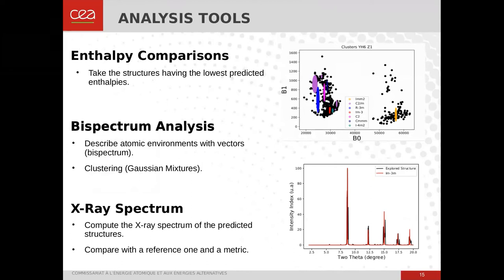That's why you need efficient tools to quickly identify the most interesting structures. I am considering three strategies. The first is based on enthalpy comparison between predicted structures. The second strategy considers bispectrum vectors: we compute around each atom the bispectrum vector, and the obtained vectors are gathered into clusters using an unsupervised machine learning algorithm like a Gaussian mixture model, thereby identifying clusters of similar atomic environments. The third strategy is based on X-ray spectra: we compute the X-ray spectrum for each explored structure and compare it with reference experimental ones using a metric.